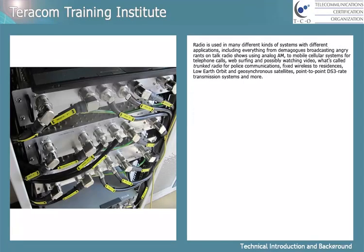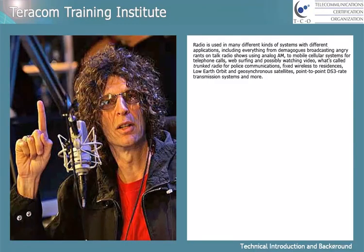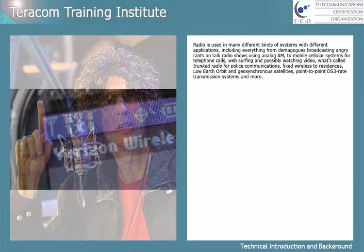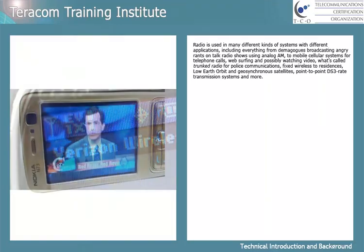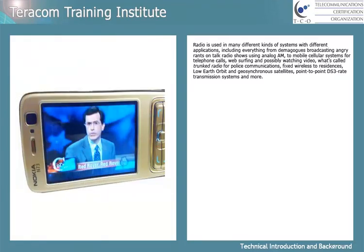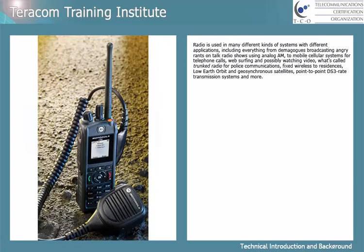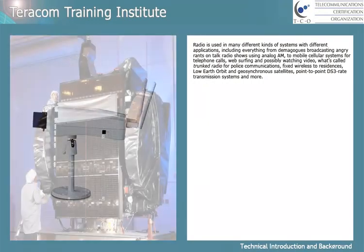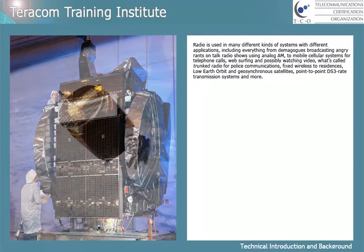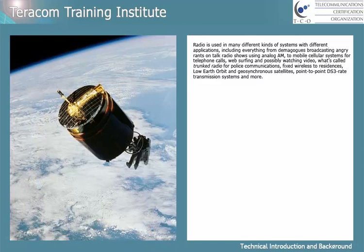Radio is used in many different kinds of systems with different applications, including everything from demagogues broadcasting angry rants on talk radio using analog AM, to mobile cellular systems for telephone calls, web surfing and possibly watching TV, trunked radio for police communications, fixed wireless to remote residences, short range wireless LANs, geosynchronous communication satellites, low earth orbit satellites, and more.